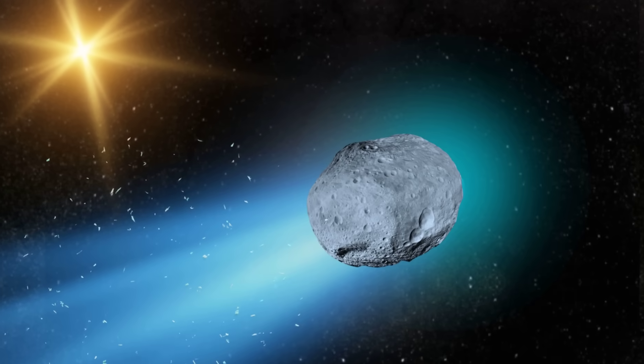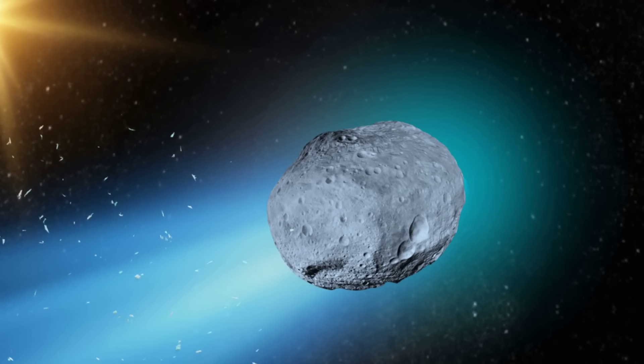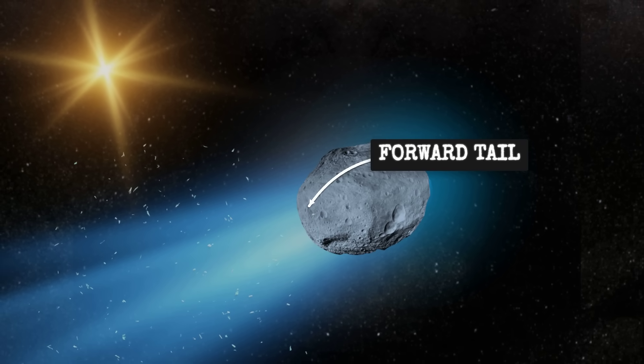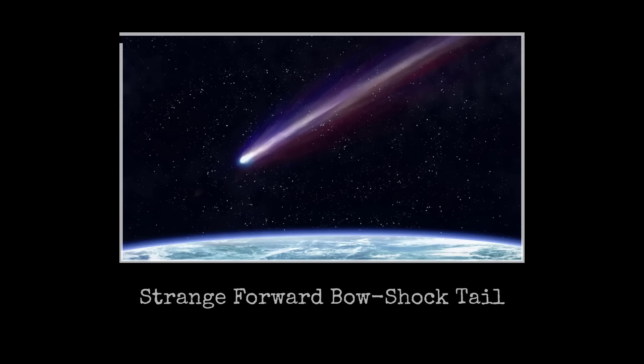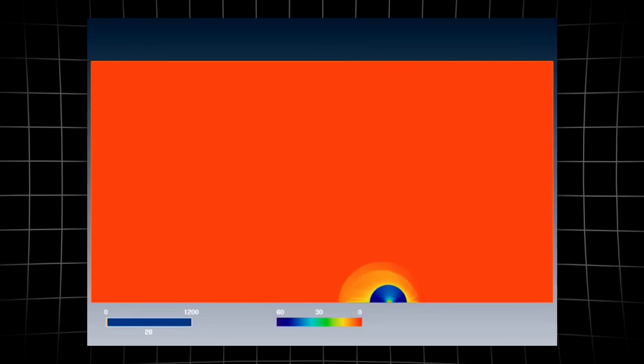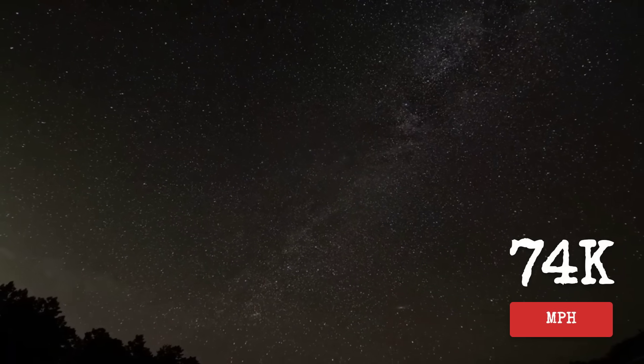Finally, here's the most visually striking anomaly, the tail structure. This image shows 3I/Atlas with its dust tail, but notice the direction. Comet tails always point away from the sun due to solar wind pressure. But 3I/Atlas has this unusual forward-pointing component, almost like it's pushing material ahead of itself. This could be due to the extreme speed at which it's traveling, creating a bow-shock effect as it plows through the interplanetary medium.